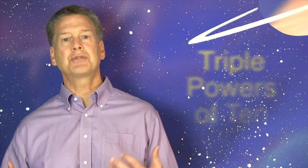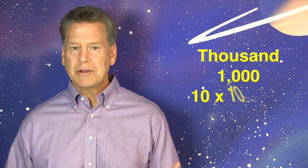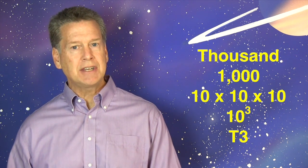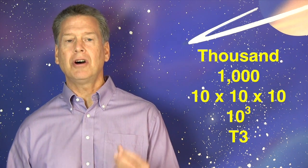Let's see if we can put a dent in this innumeracy problem. Let's see if we can get a grip on something very basic, what I'll call the triple powers of 10. 1,000, a 1 followed by 3 zeros, 10 times 10 times 10, 10 to the 3rd power, I'll call it T3.